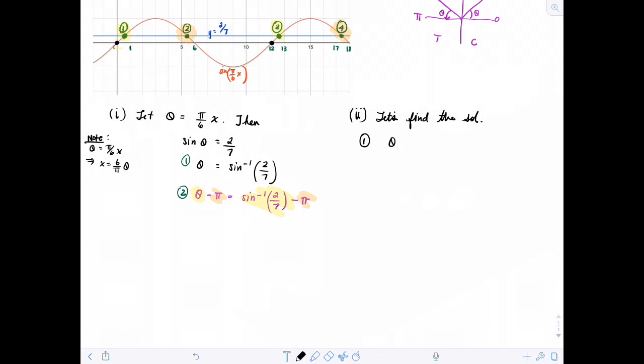So for the first solution, number one, is going to be theta equal to the inverse sine of 2 sevenths. But theta is equal to pi over 6x. So this means that pi over 6x is equal to the inverse sine of 2 sevenths. And x will be equal to inverse sine of 2 sevenths times 6 over pi. Okay, so,